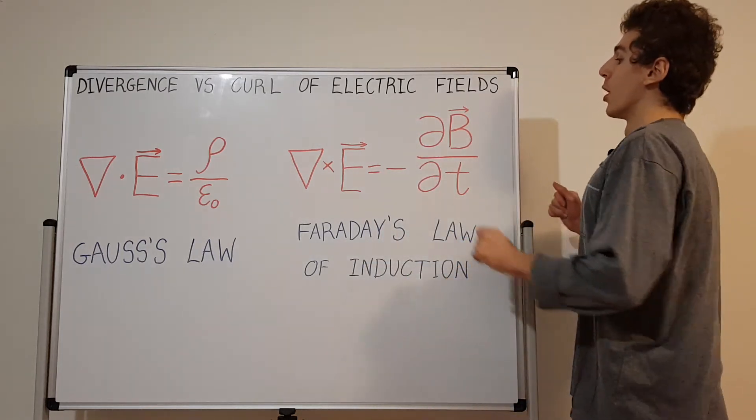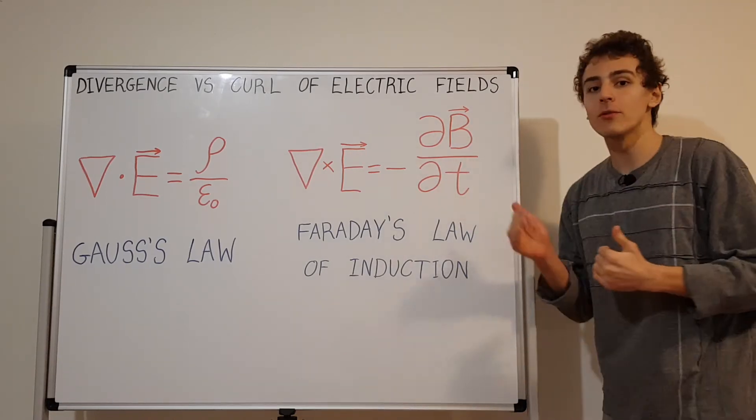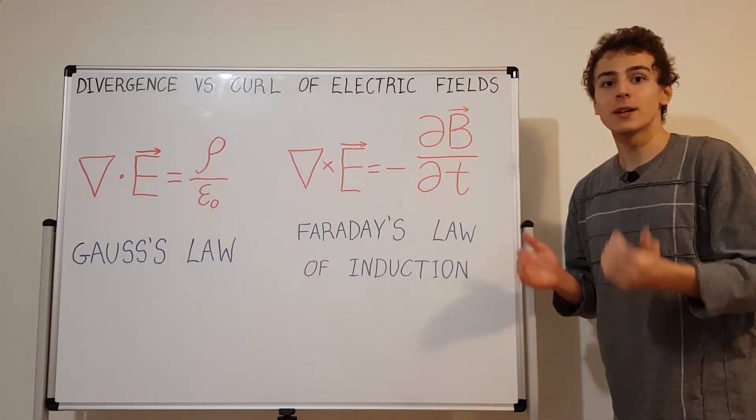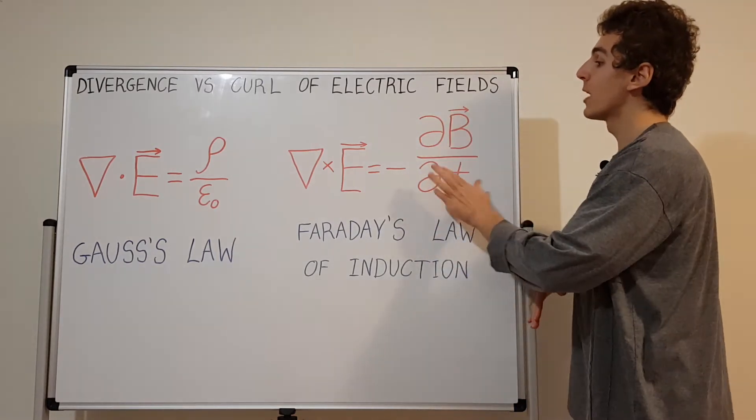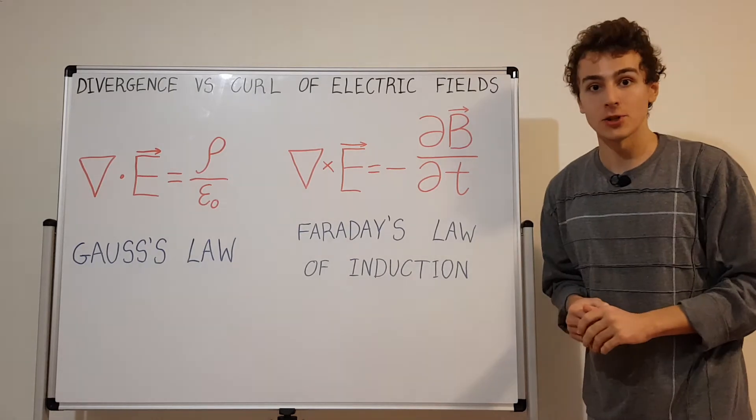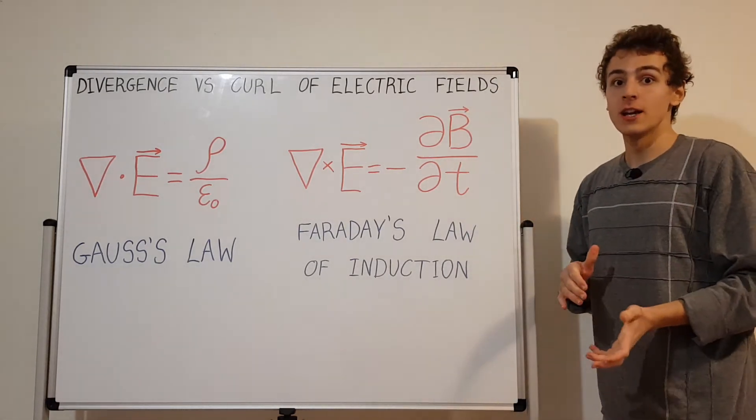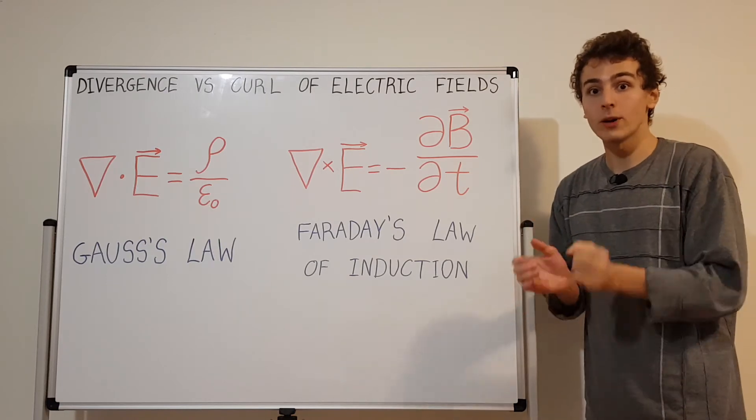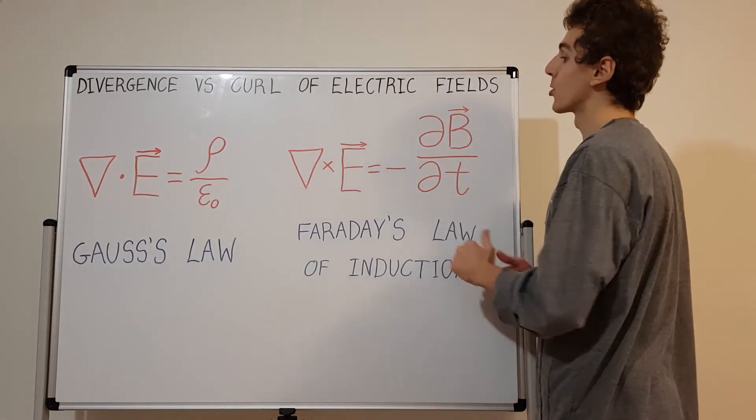What does it mean to partially differentiate with respect to time? That's concerning the time evolution of the magnetic field. If the magnetic field is constant and not changing at all, this term will be zero and there won't be any circulation. But if there's either a positive or negative change to the magnetic field at a given point, that point is going to have an associated non-zero curl.